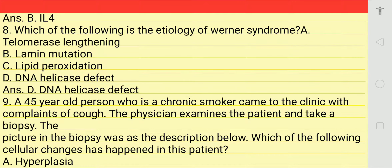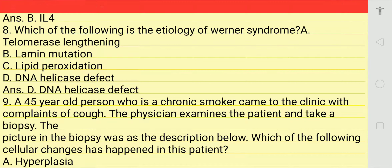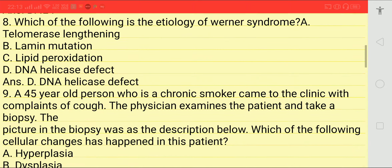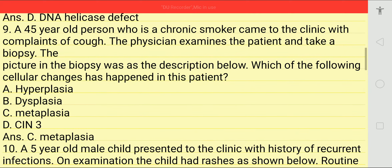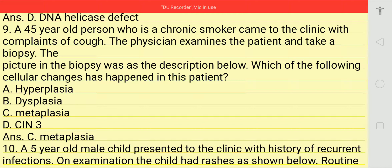Which of the following is the etiology of Werner syndrome? Options: telomere lengthening, lamin mutation, lipid peroxidation, or DNA helicase defect. Answer is DNA helicase defect.